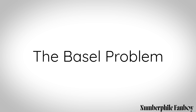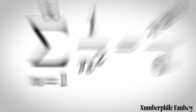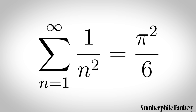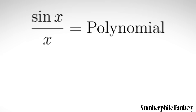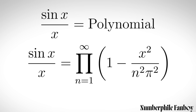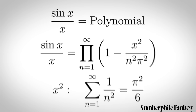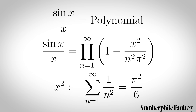The Basel problem asks for the exact sum of the infinite series one over n squared, from n equals one to infinity. Leonhard Euler solved it by treating sine x over x like a polynomial and expanding its infinite product of roots, then comparing the coefficients of x squared to find that the infinite sum equals pi squared over six.